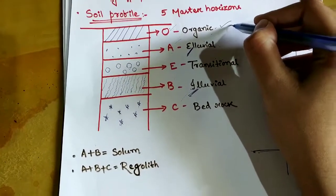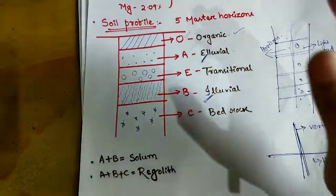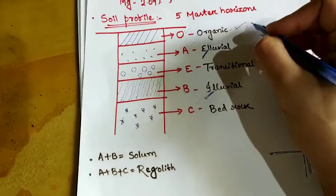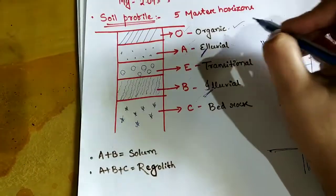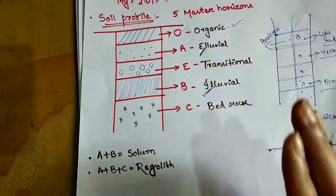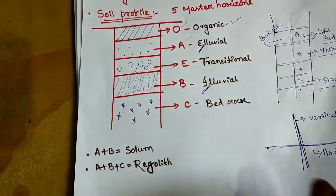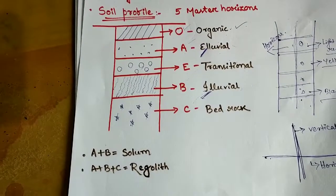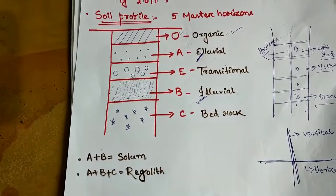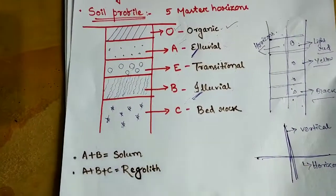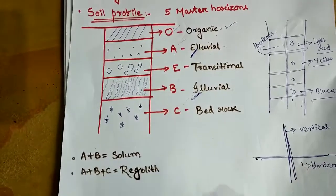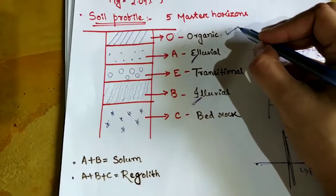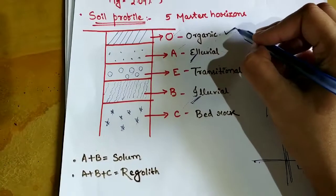The organic horizon (O) is the most important and the first layer in the soil profile. Two important things about this layer: first, it is usually found in undisturbed ecosystems, especially in forests. Second, it is thin or even absent in cultivated land. Let me explain why it is absent in cultivated land but present in forest areas.